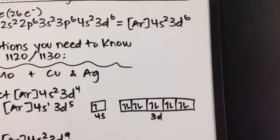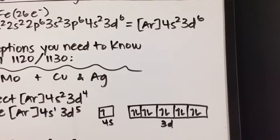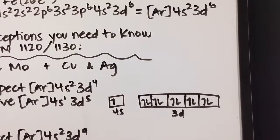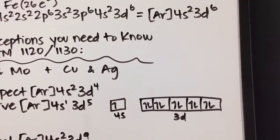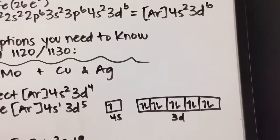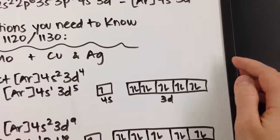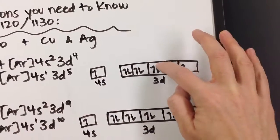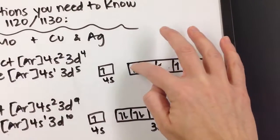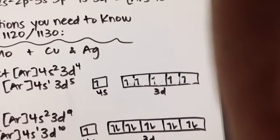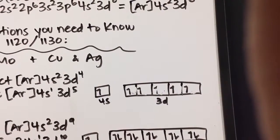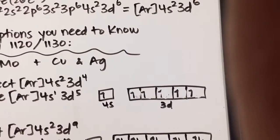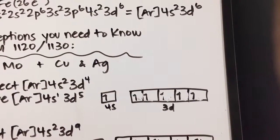And the reason for that is a quantum mechanical answer that we really don't want to spend forever discussing, but you just need to know that this is an exception. From a quantum mechanical perspective, it is more stable to have the D-block—and I accidentally drew too many electrons here—completely half filled. From a quantum mechanical perspective, it is more stable to have the D-block completely half filled.